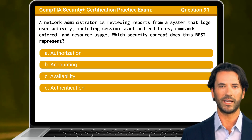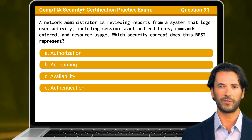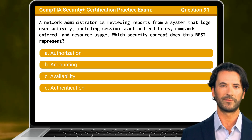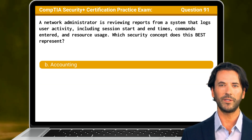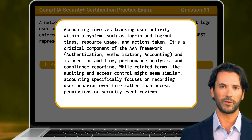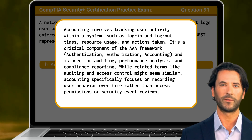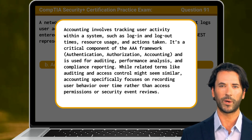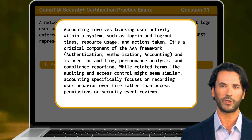Question 91: A network administrator is reviewing reports from a system that logs user activity including session start and end times, commands entered, and resource usage. Which security concept does this best represent? The answer is B, accounting. Accounting involves tracking user activity within a system such as login and logout times, resource usage, and actions taken. It's a critical component of the AAA framework and is used for auditing, performance analysis, and compliance reporting. While related terms like auditing and access control might seem similar, accounting specifically focuses on recording user behavior over time rather than access permissions or security event reviews.